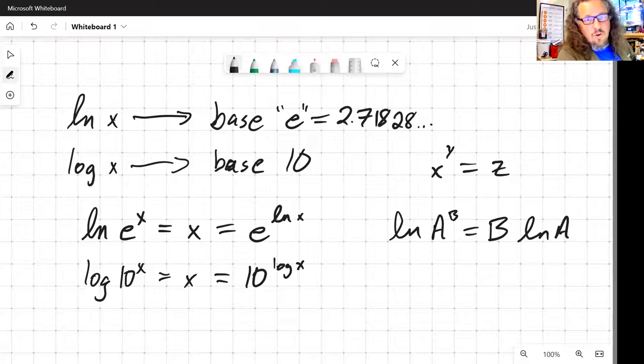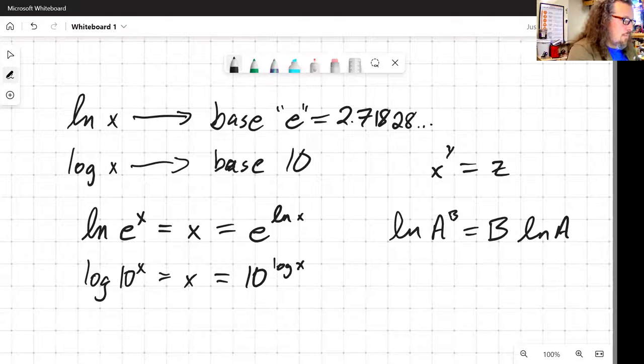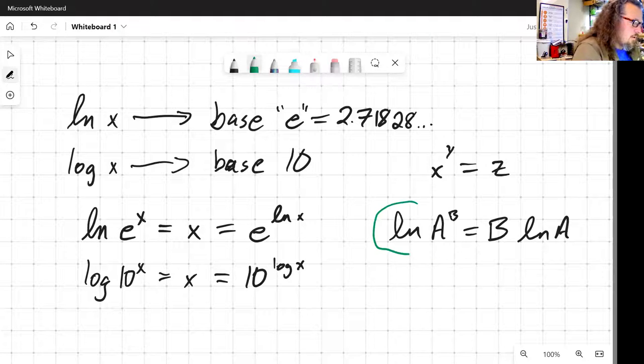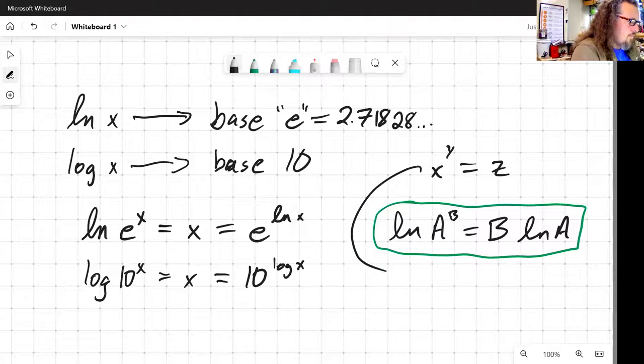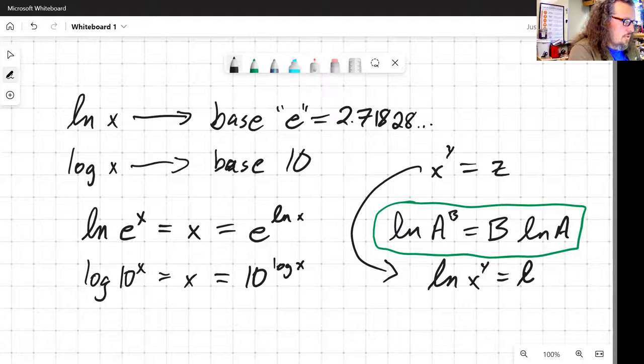A relationship for us to remember is log of A raised to the B is equal to B times log A. So here's one of the probably most common ways for us to just use logarithms as a tool. Logarithm lets us pull an exponent out to the front, so it gives us a way to solve for an exponent. Going back up to that problem, we could say that if we follow this problem down,